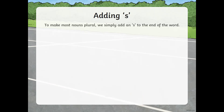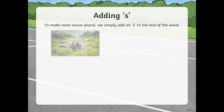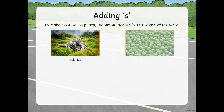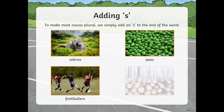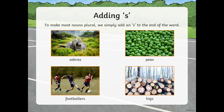Adding S: when we add an S to make most nouns plural, we simply add an S to the end of the word. Most words follow this rule — zebra, bees, football players, logs.